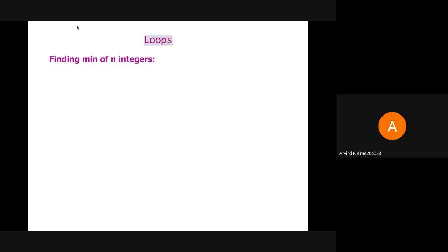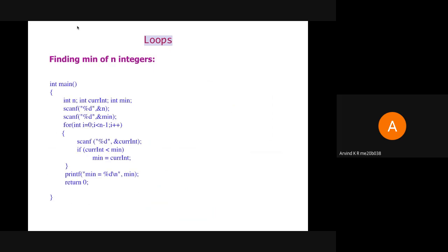For finding the minimum of n integers: previously we found the minimum of three integers using two if conditions. Here we use loops instead. We scan in the value of N and the first variable directly into min. We have a for loop running from 0 till N - 1, because we have already scanned one variable and only need to scan N - 1 more. We scan variables one by one and store them in current_int. If current_int is lesser than min, we update the value of min.